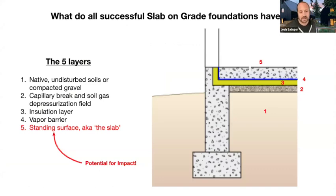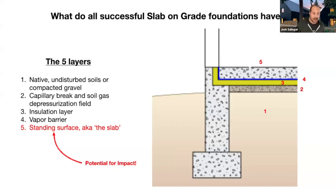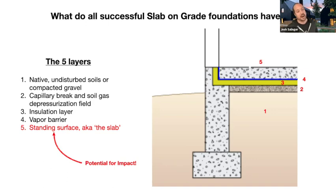All successful slab-on-grades have five basic layers. First, there are the native undisturbed soils. Second is the gravel — a capillary break to stop bulk water from wicking up, and also a soil gas depressurization field to collect radon gases. Third is an insulation layer for comfort. Fourth is the vapor barrier, to stop vapor drive from the ground, which is typically at 100% relative humidity, from entering the building. And on top of that, fifth, you have your slab — your standing surface — and this is the part with potential for impact: replacing the concrete.